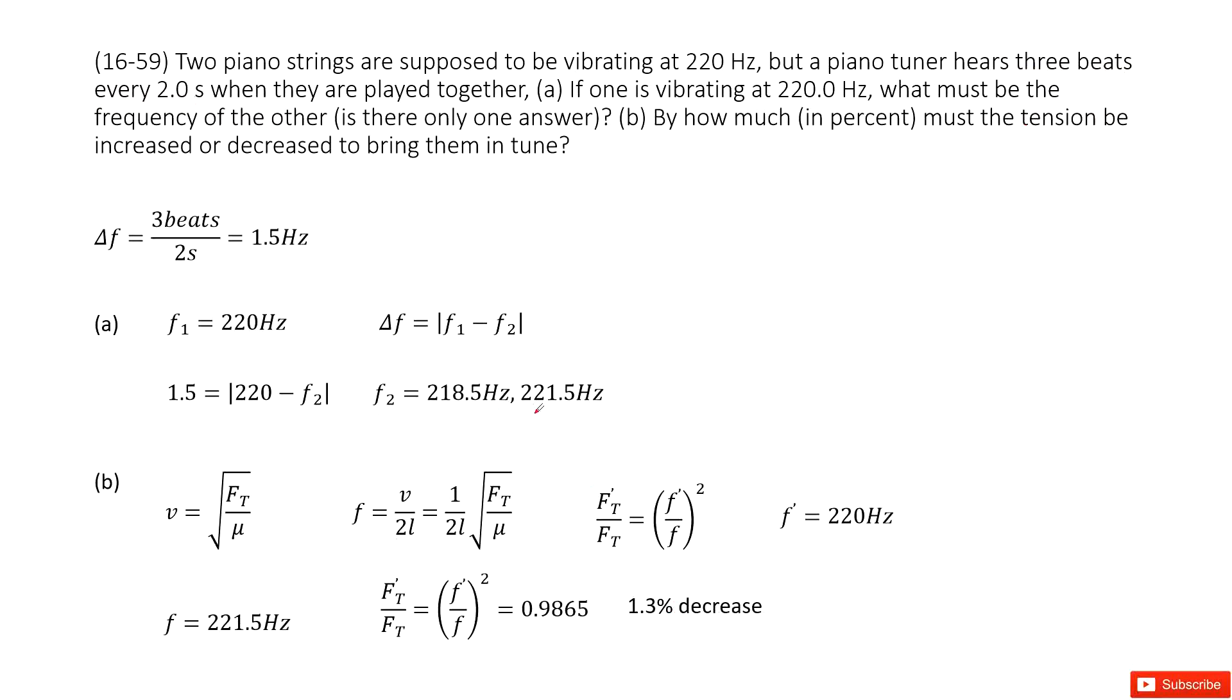The second case is we take the f2 as 221.5 hertz. Similarly, we can get the tension ratio as 0.9865. That is 1.3% decrease. Thank you.